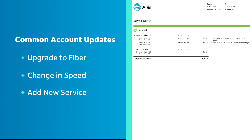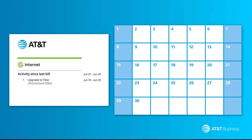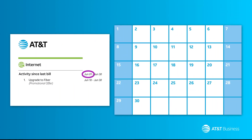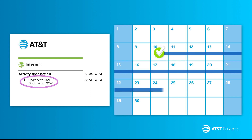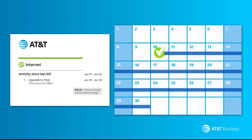Let's look at how to estimate partial month charges and credits if you've made a change to your account between bill periods. Let's say your bill period starts on the 1st of the month and you upgrade to fiber on the 10th. When you get your next bill, you'll see partial charges for the upgrade starting on the day you added that feature.